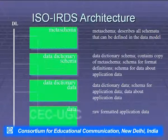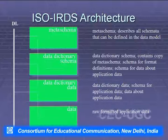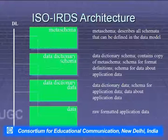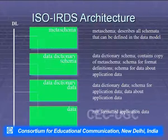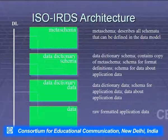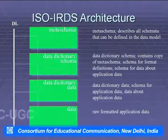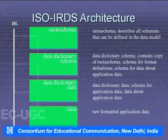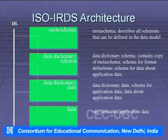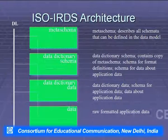The meta-schema describes all schemas that can be defined in the data model. The data dictionary schema contains a copy of the meta-schema, schema for the format and definitions, schema for data about application data, data dictionary data, schema for application data, data about application data, and raw formatted application data.